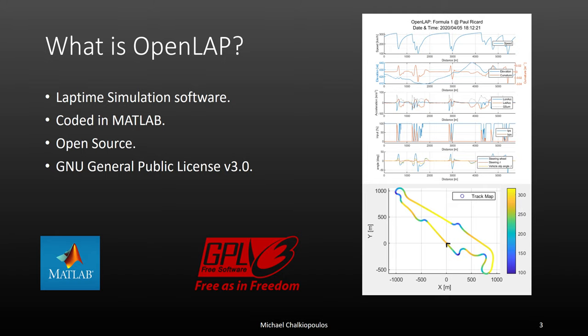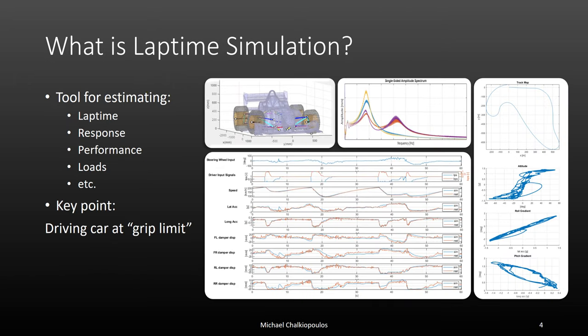Open Lab is an open source lap time simulation software coded in MATLAB that is licensed under the GPL. Lap time simulation in general is a tool where you mathematically model a vehicle and allow the computer to drive it around a specific circuit, and you can gain a lot of valuable information about things like loads, lap time performance, the vehicle's response, and the vehicle's response to different setups.